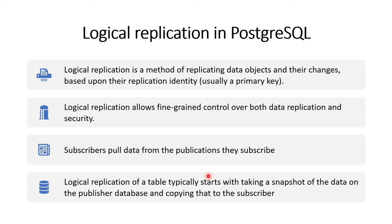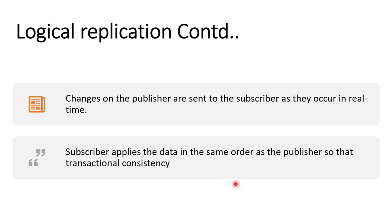When we set up logical replication, we set up two different hosts with two different instances and two databases. Initially, we have to replicate the data from publisher to subscriber so the initial data is the same. Once the initial data is the same, using PostgreSQL logical replication, whatever changes are happening on the publisher will be automatically subscribed by the subscriber in real time, and the same changes are applied on the subscriber.